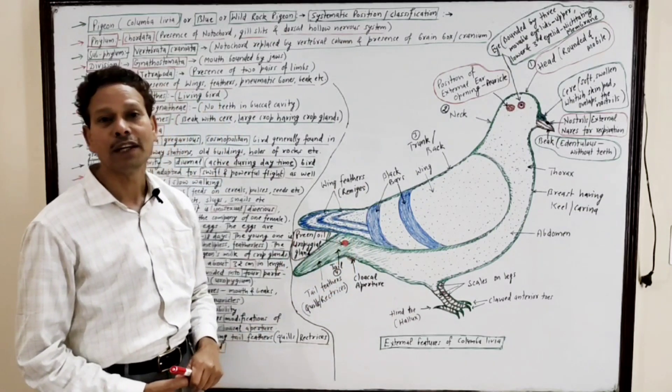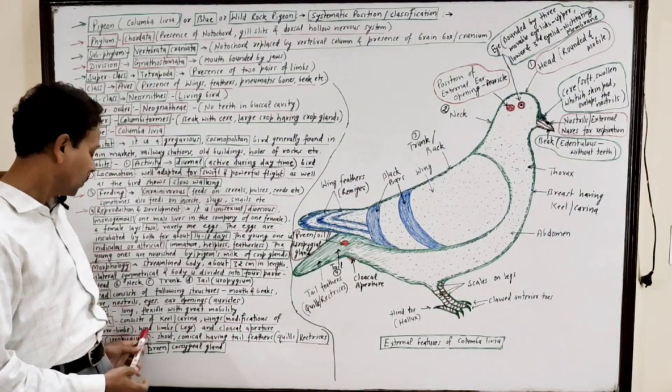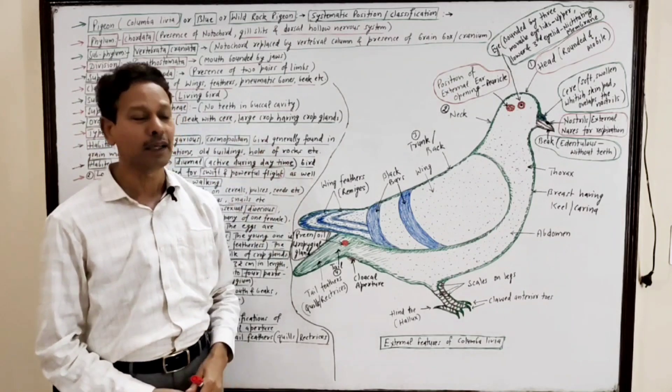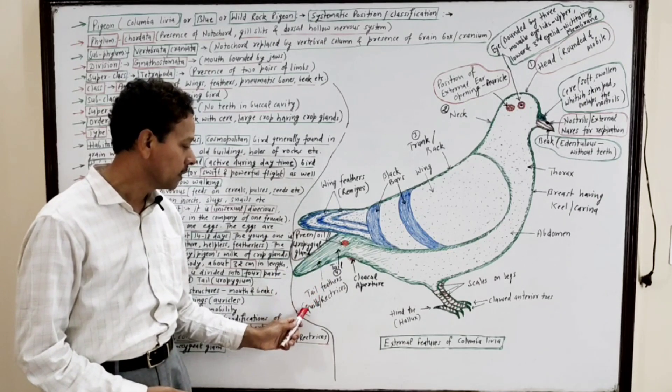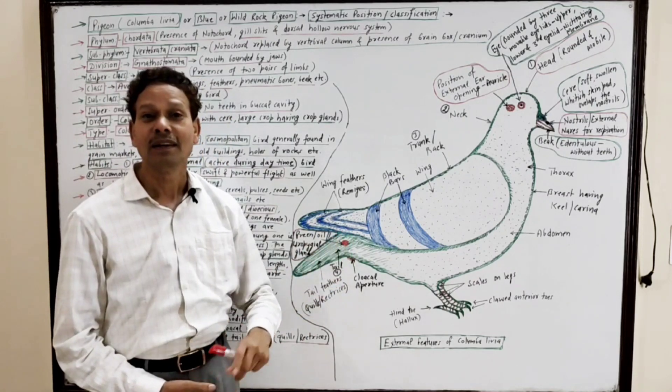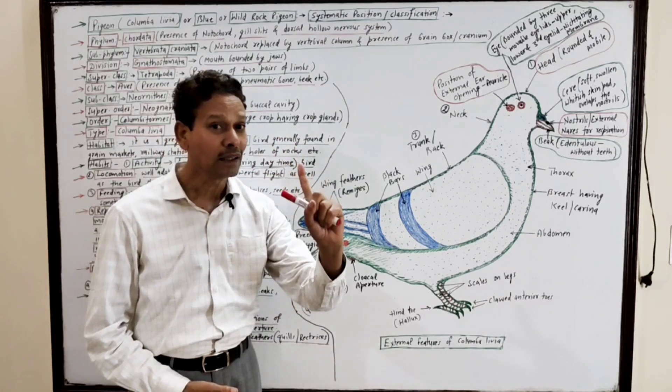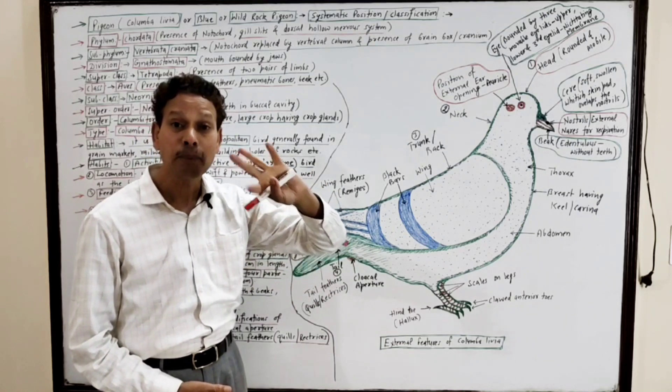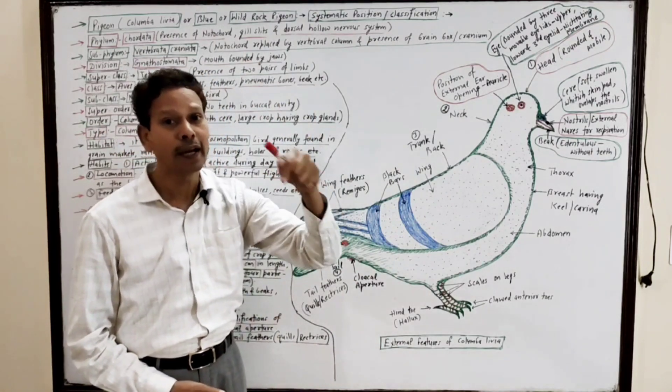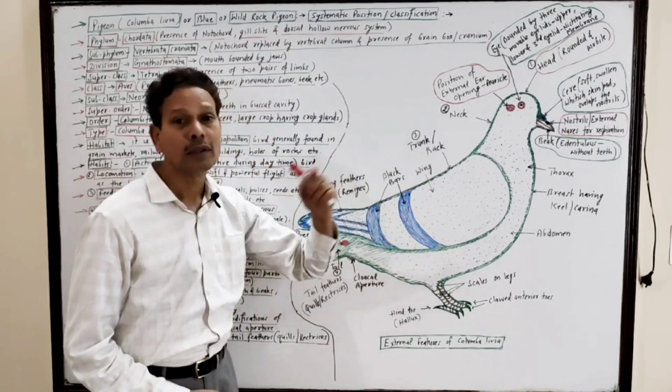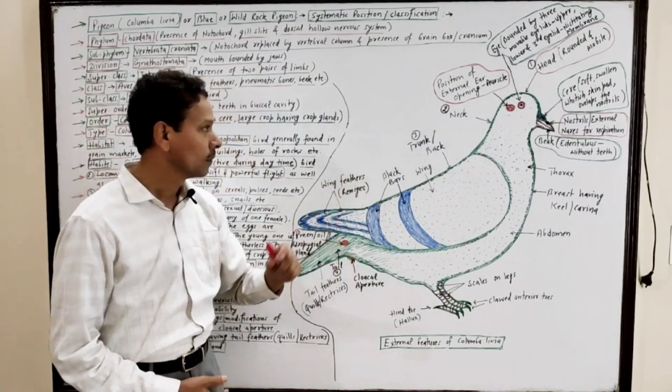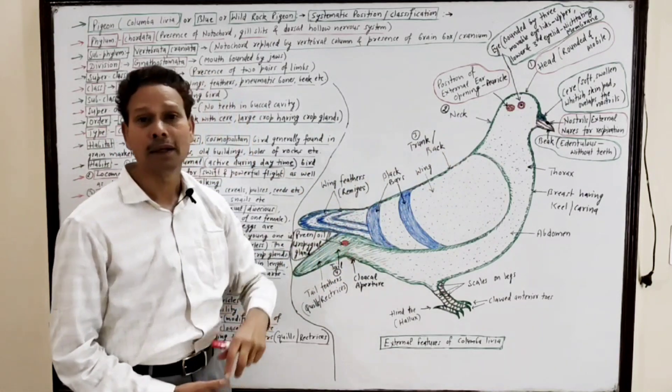The last part is tail or uropygium. Note for competitive exam students: tail or uropygium is very small, it is conical and is covered by tail feathers, quills or rectrices. On this tail region only one oil gland is present - it is preen gland or uropygial gland or coccygeal gland. This is the only gland which is present on the body of pigeon. It is an oil gland that secretes oil which is used by the bird to shine the feathers.